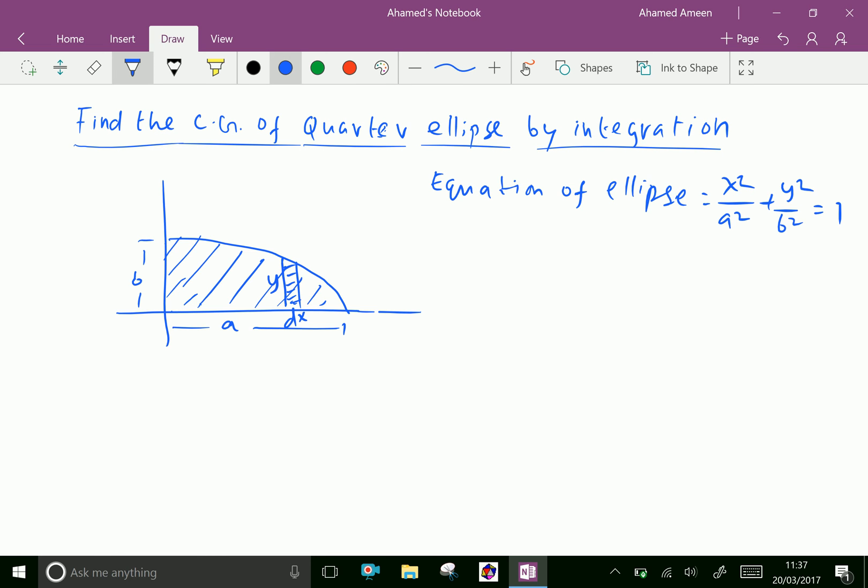Now moment of area of the strip from base equal y over 2 into area is y dx, which is equal y squared over 2 dx.